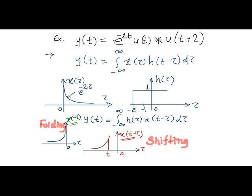To start with, state the formula of convolution integral: y of t is equal to integral from minus infinity to plus infinity of x of tau times h of t minus tau d tau.